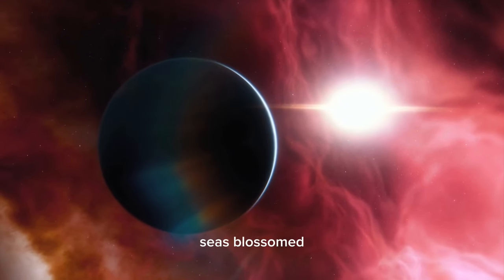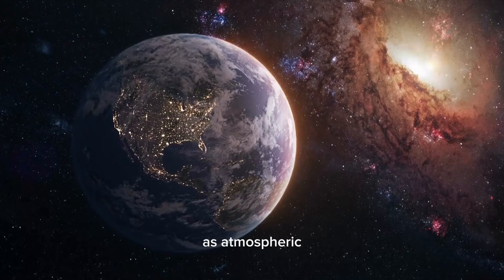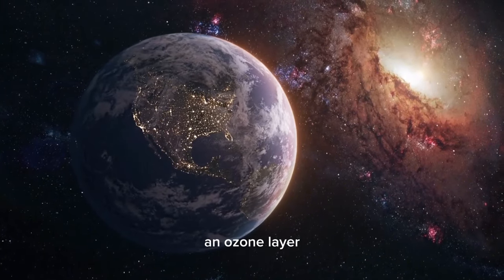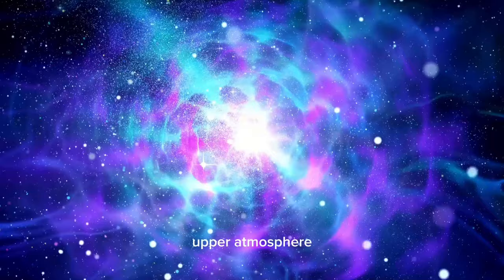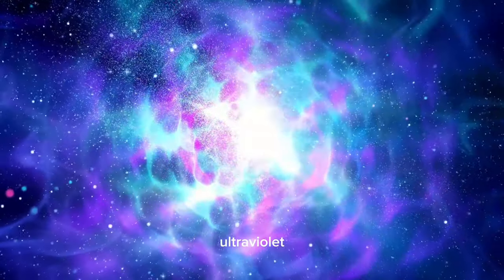Estuaries and open seas blossomed with new life, particularly as atmospheric oxygen levels continued to rise. An ozone layer took shape in the Earth's upper atmosphere, serving as a guardian against the sun's harmful ultraviolet radiation.